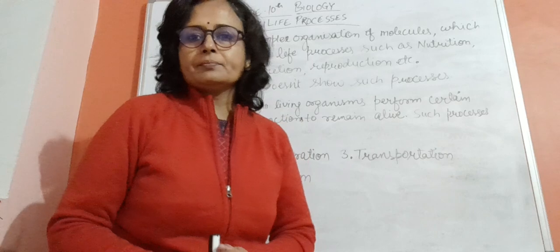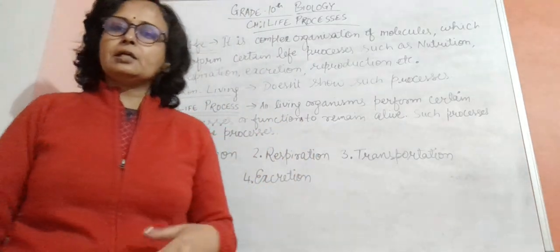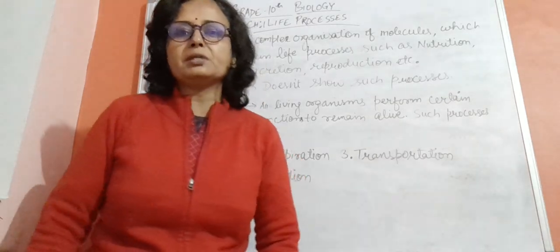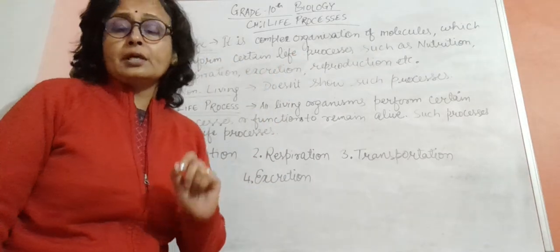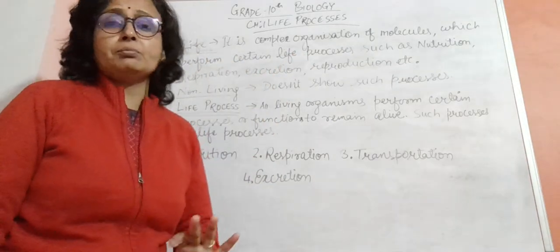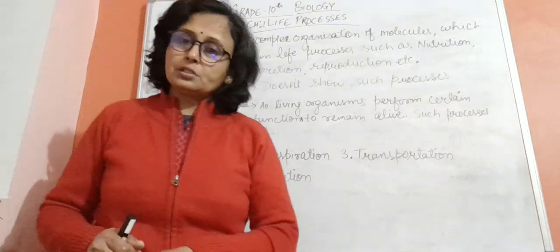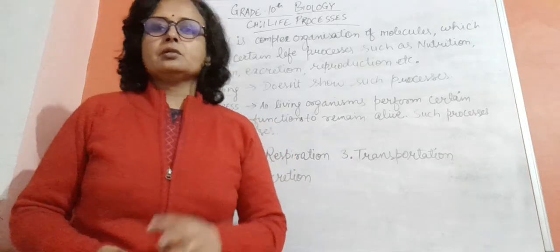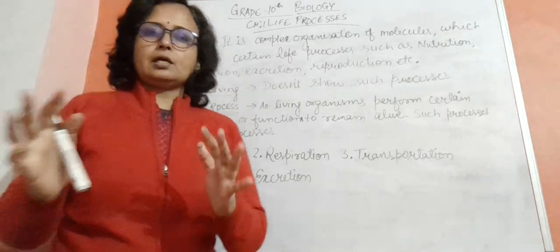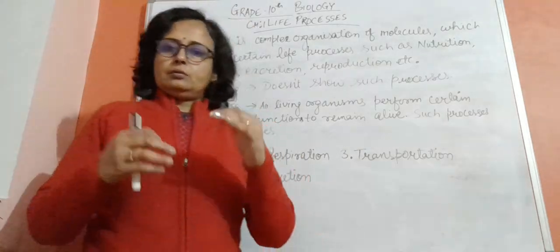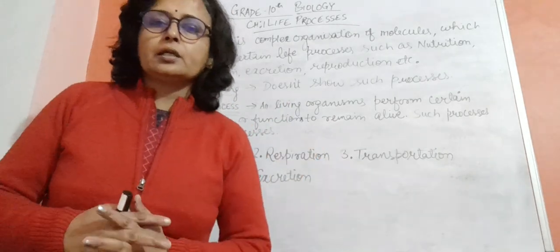Life or living organism is a complex organization of molecules. Kis se milke bana hai? Molecule se milke bana hai. Bhoat saare chemicals se milke bana hai. And which performs certain life processes. What are those life processes? Might be nutrition, respiration, excretion, transportation, reproduction, whatever life processes are happening in the living organism's body. All those jho living organism ko living rakhne ke liye.